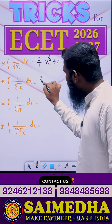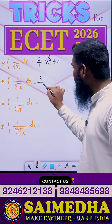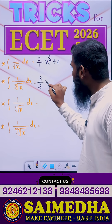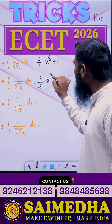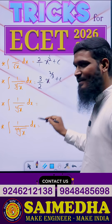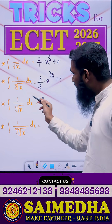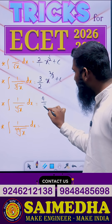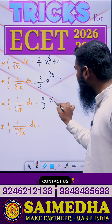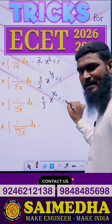Similarly, cube root means 3. We decrease the number 3 by 1, giving 2, so the answer is 2 into x power 2 by 3, plus c. Next, for the 4th root: decreasing the number gives 3, so the answer is 4 by 3 into x power 3 by 4, plus c.